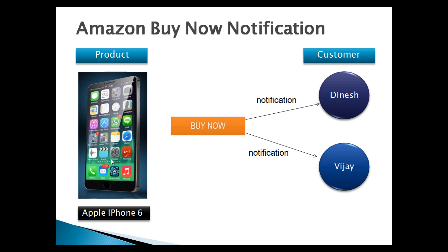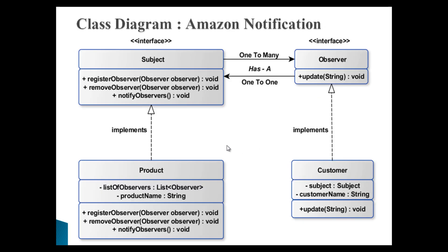Let's understand it through a class diagram. Here you can see there are two interfaces by name: Subject and Observer.